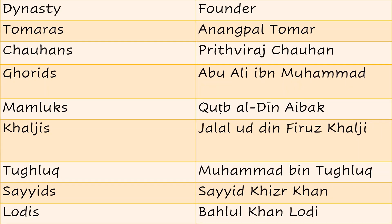Here comes the dynasty and the founder. The dynasties are: Tumaras, Chauhans, Gorids, Mamluks, Khaljis, Tughluq, Saids, and Lodhis. Their respective founders are: Anangpal Tomar, Prithviraj Chauhan, Abu Ali ibn Muhammad, Qutub-ud-din Aibak, Jalaluddin Firuz Khalji, Muhammad bin Tughluq, Saids, and Bahlul Khan Lodhi.